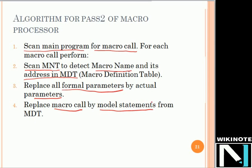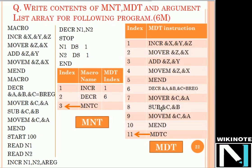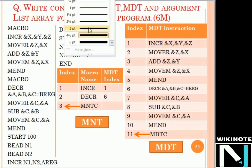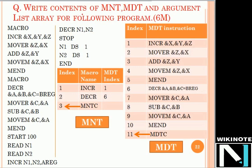Now we will see with the help of an example how MDT, MNT, MNTC, and MDTC work, and how we generate the argument parameter list. In the exam they may ask: write the contents of MNT (macro name table), MDT (macro definition table), and argument list array for the following program. This question may be asked for six marks — two marks for MNT, two marks for MDT, and the remaining marks for the argument list array. The macro definition is available at the start of the program here.